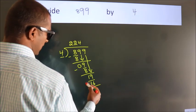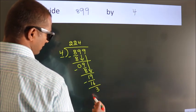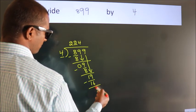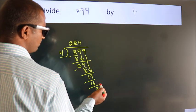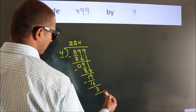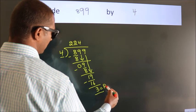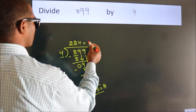Now, we subtract. We get 3. After this, no more numbers to bring it down. So, we stop here. This is our remainder. This is our quotient.